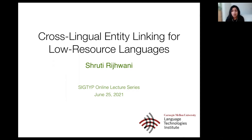In this part, I will describe cross-lingual entity linking, the methods that are typically used, and the associated challenges for low-resource learning. Parts two and three of the talk will discuss an entity linking model that overcomes some of these challenges using transfer learning and pivoting. And finally, in part four, I discuss how the entity linking model can also be used to improve low-resource named entity recognition.